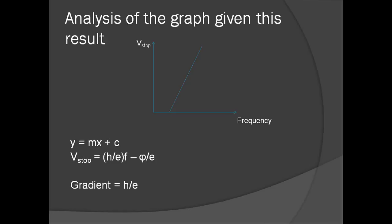So by simply measuring the stopping potential for different colors of light and drawing a graph, we have been able to measure Planck's constant, the fundamental constant that governs the quantum world.